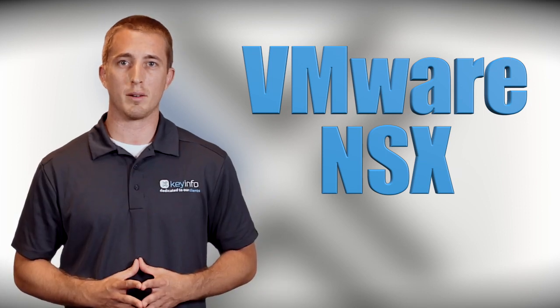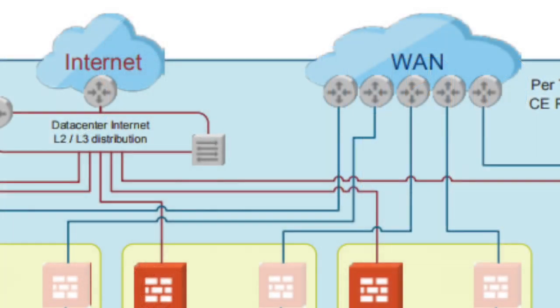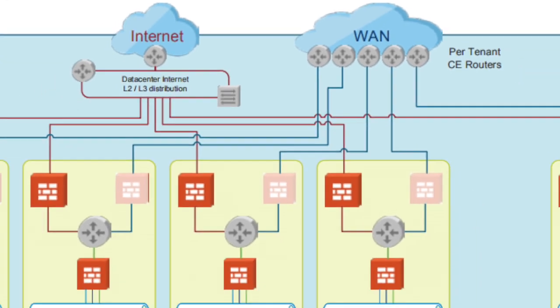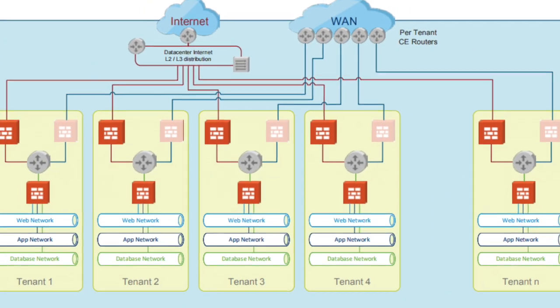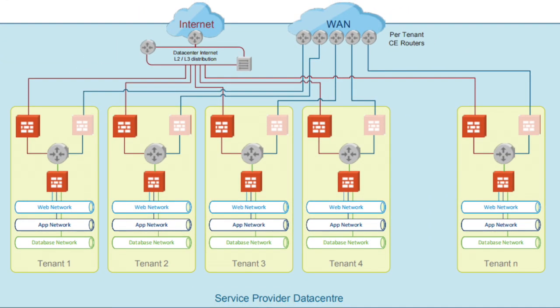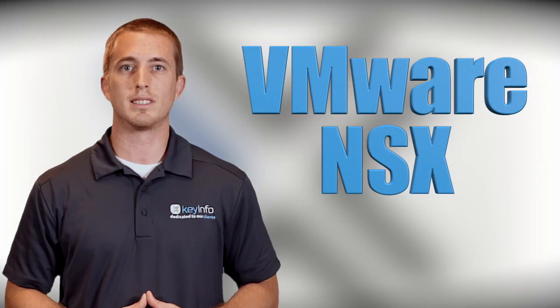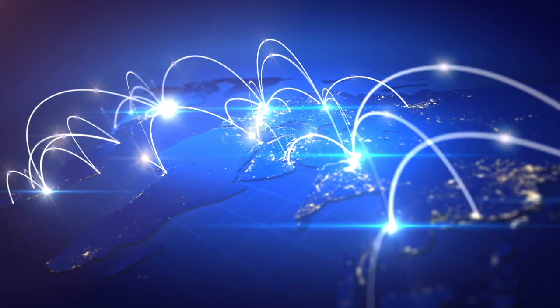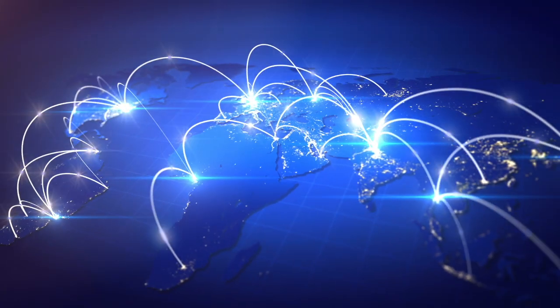Another key feature of software-defined networking is the ability to implement multi-tenancy to support different environments, such as a test environment and a production environment. The elegance of the VMware NSX solution is that both environments can implement identical, overlapping IP address ranges that NSX maintains as separate and distinct. This enables tests to resemble production more closely without the need to purchase and maintain separate hardware networking environments.